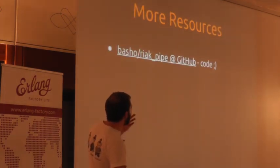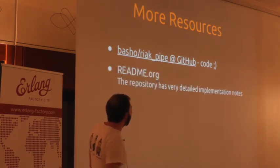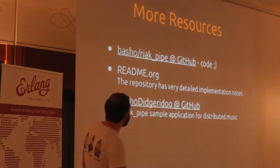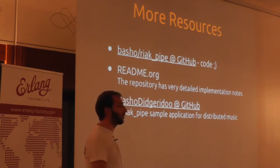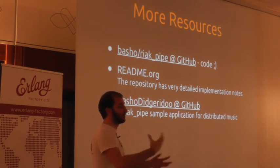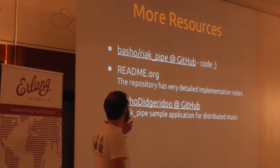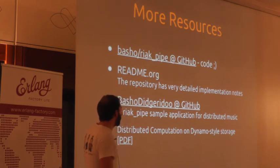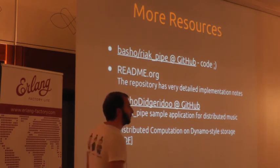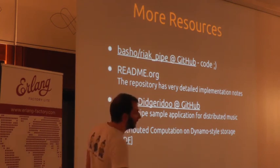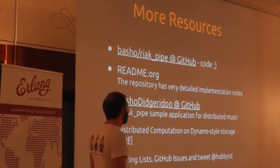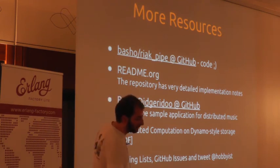More resources on React Pipe: the GitHub code is up online and open source. The README has a lot of detailed implementation notes — if you want to know exactly what's going on and how it connects directly to React Core, you can find out a lot more there. Basho Didgeridoo: I mentioned Basho Banjo, which is the React Core example application for playing a MIDI file in a cluster, to experiment with building a React Core-based system. The Didgeridoo is a rewrite of that running through React Pipe — still going through Core, but via Pipe. All this work is summarized in a research paper written by Brian Fink. There's also a mailing list, GitHub issues, and you can tweet Brian — he's happy to talk through things about React Pipe.